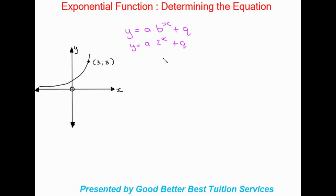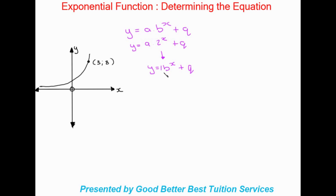Another approach is when the equation is given in the form y equals b to the power of x plus q. In this scenario, a is just being held as a placeholder with a value of one, which is completely allowed — we don't have to include it in our equations.